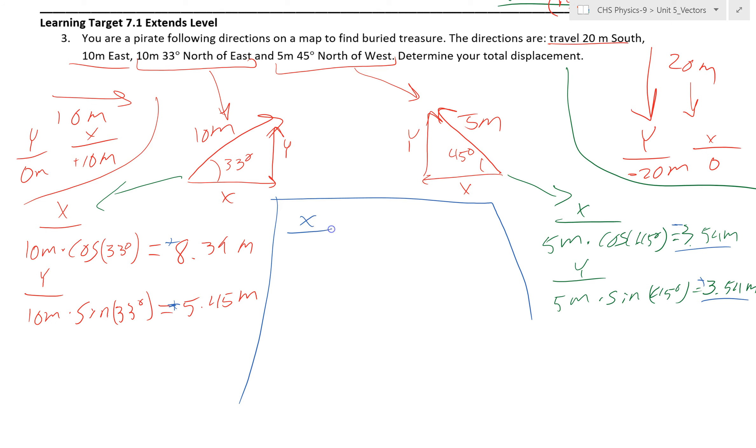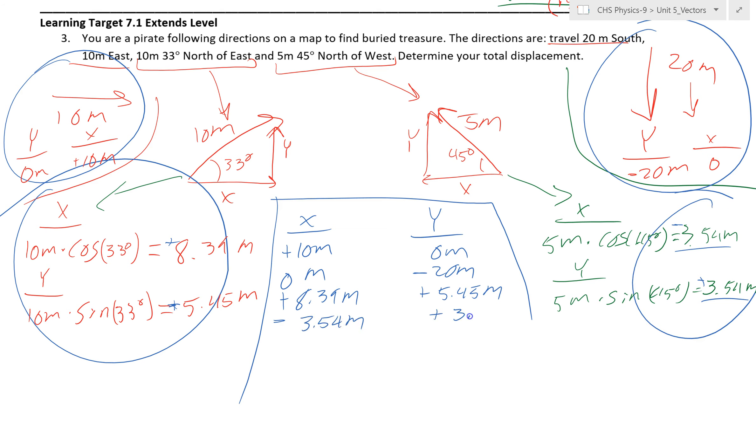Then we have to add up the x and y components. So I'm going to go back to this guy right here. The x component for that one was positive 10 meters, the y component was 0 meters. This one, in the x component, is 0 meters, and in the y component is negative 20 meters. Now this one is in the x direction positive 8.39 meters, and in the y direction positive 5.45 meters. And then this one, in the x direction, we've got negative 3.54 meters and positive 3.54 meters.